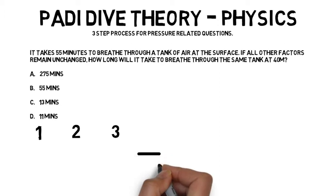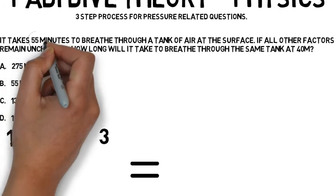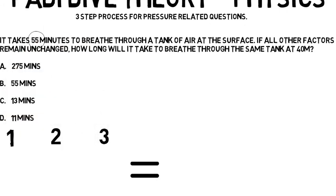What goes under space 1? Well, we're going to look at the units the question is asking us about. If we look at answers A, B, C, and D, it's all about minutes. So looking at the question, let's take the number of minutes given to us. In this case, it's 55.